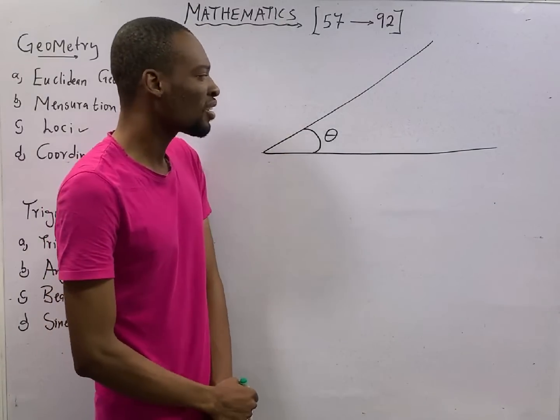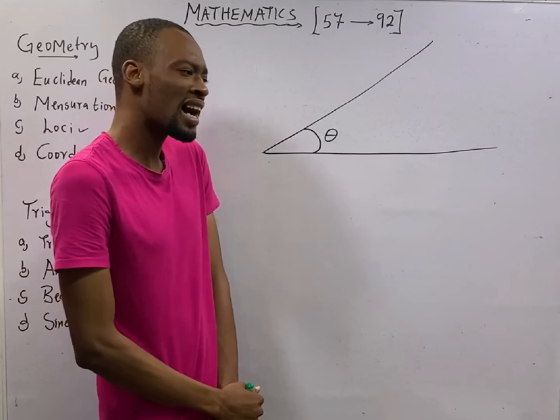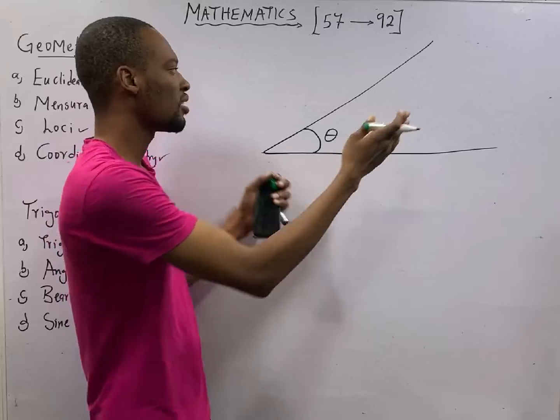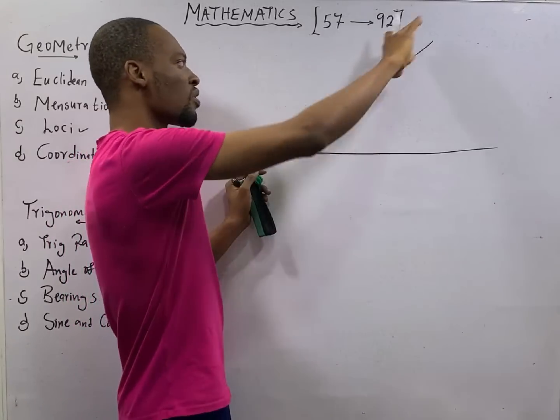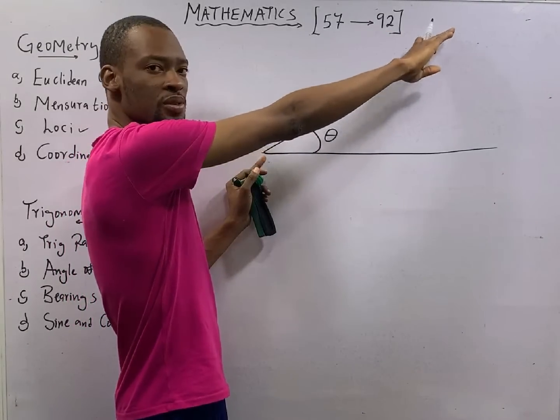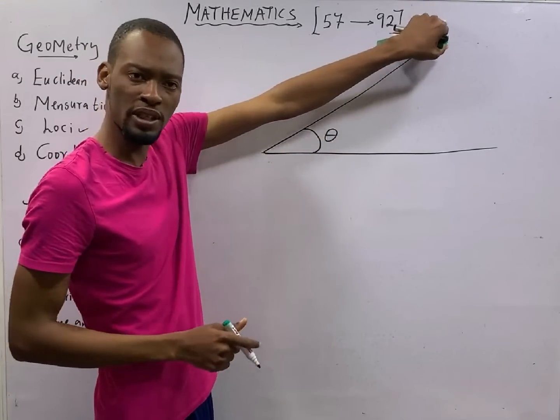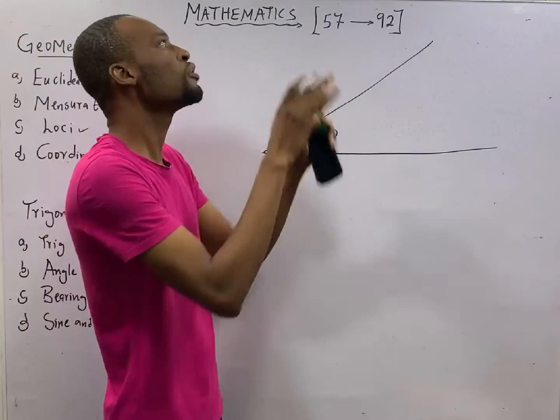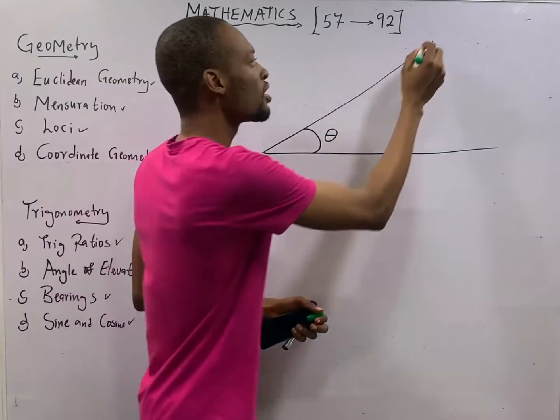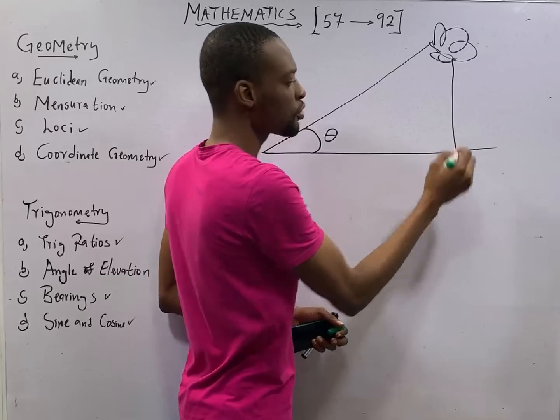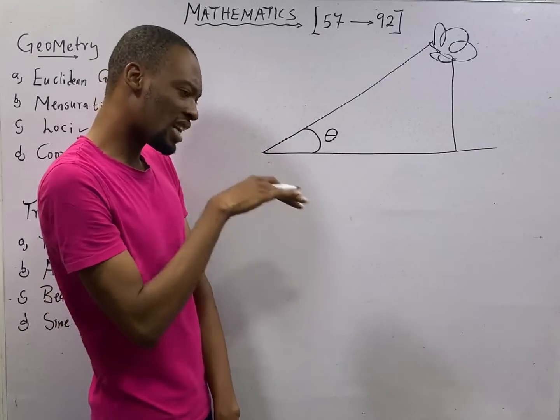Now, under angle of elevation, you may be asked the distance between the observer and the object, or the hypotenuse, like the distance from the base to the top of the object. Let's say what I am viewing is a tree. This is a tree. This is the root of the tree.